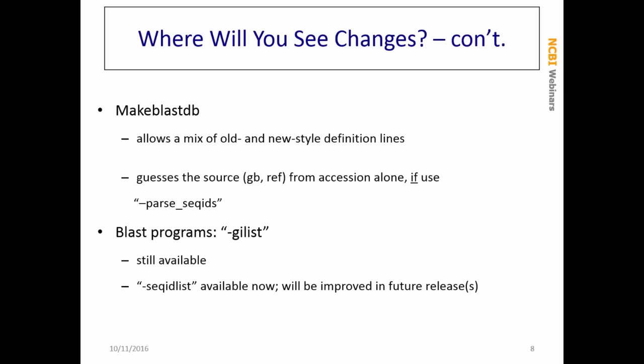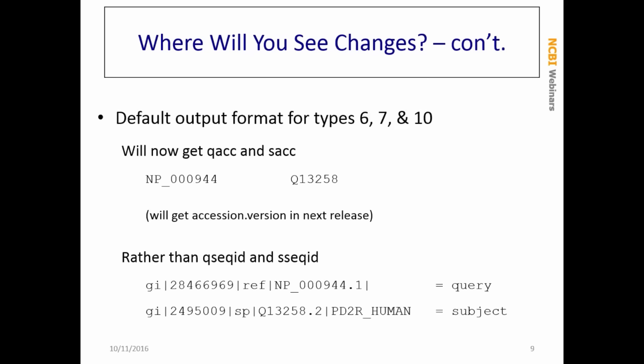The next release is 2.6.0, and as of today that's scheduled to come out either in December of this year or perhaps early next year. Regarding the default output format: those of you using tabular output formats will now get by default query accession and sequence accession — in other words, accession numbers. In the next release you'll be getting accession.version, so you will not be getting back GI-style definition lines by default.